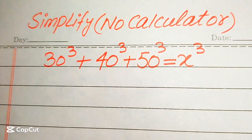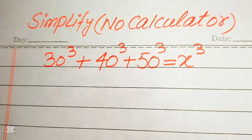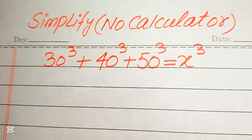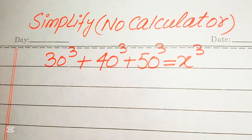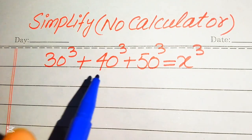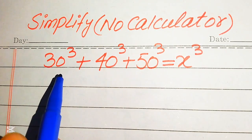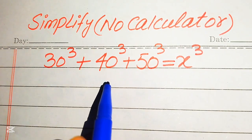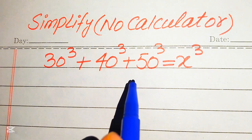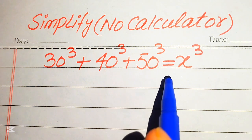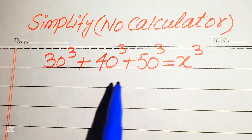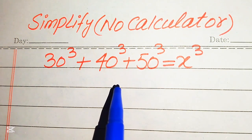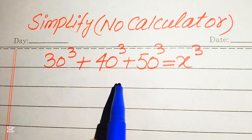Hello everyone. Today I want to show you how to solve this problem for the values of x, if we have 30 cubed plus 40 cubed plus 50 cubed equals x cubed, and we solve this problem for all the values of x.